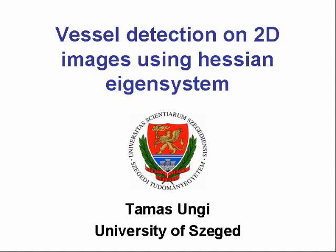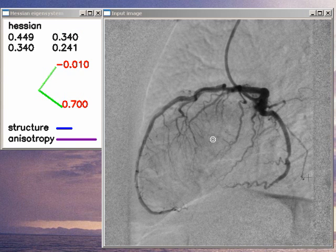Hello, I'm going to talk about a special kind of image segmentation called Vessel Detection or Vesselness Enhancement. We are going to analyze the second order characteristics of image points. I would like to show you a simple demo program. Here on the right side you see our sample input image. This is the X-ray digital subtraction angiography of human coronary arteries.